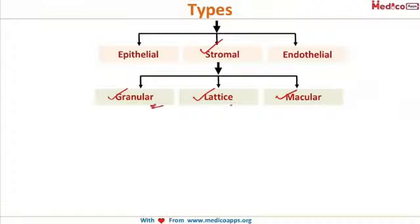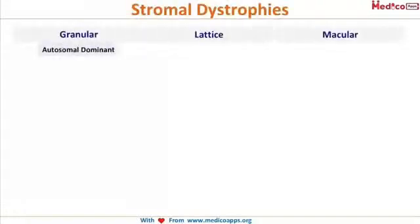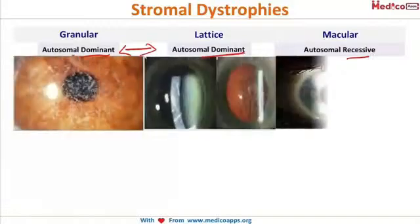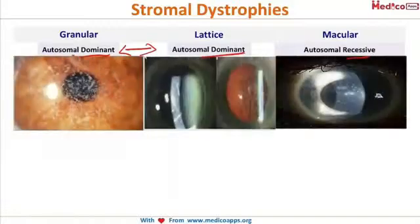The stromal corneal dystrophies are only three types: granular, lattice, and macular. Depending on their appearance, they are classified as granular, lattice, or macular corneal dystrophies. The granular and lattice are both autosomal dominant. The only recessive type is the macular corneal dystrophy.